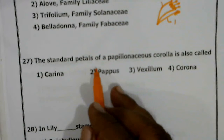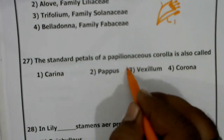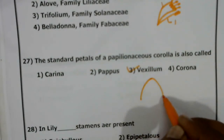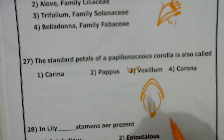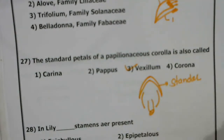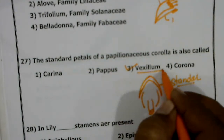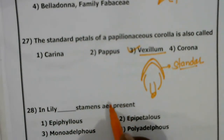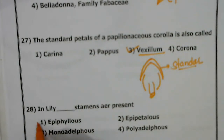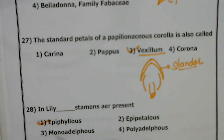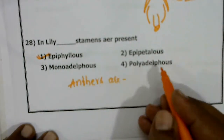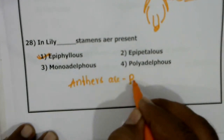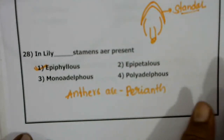The standard petal of Papilionaceae corolla is also called the vexillum. In the lily, stamens are present in epiphyllous condition — meaning the anthers are attached to the perianth. That is called epiphyllous.